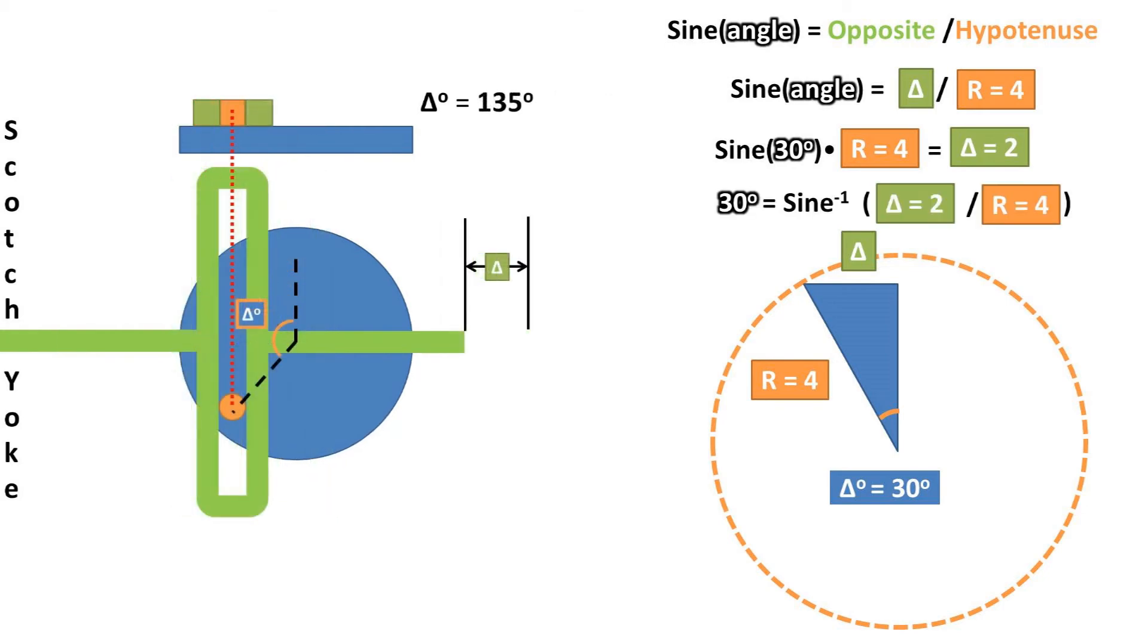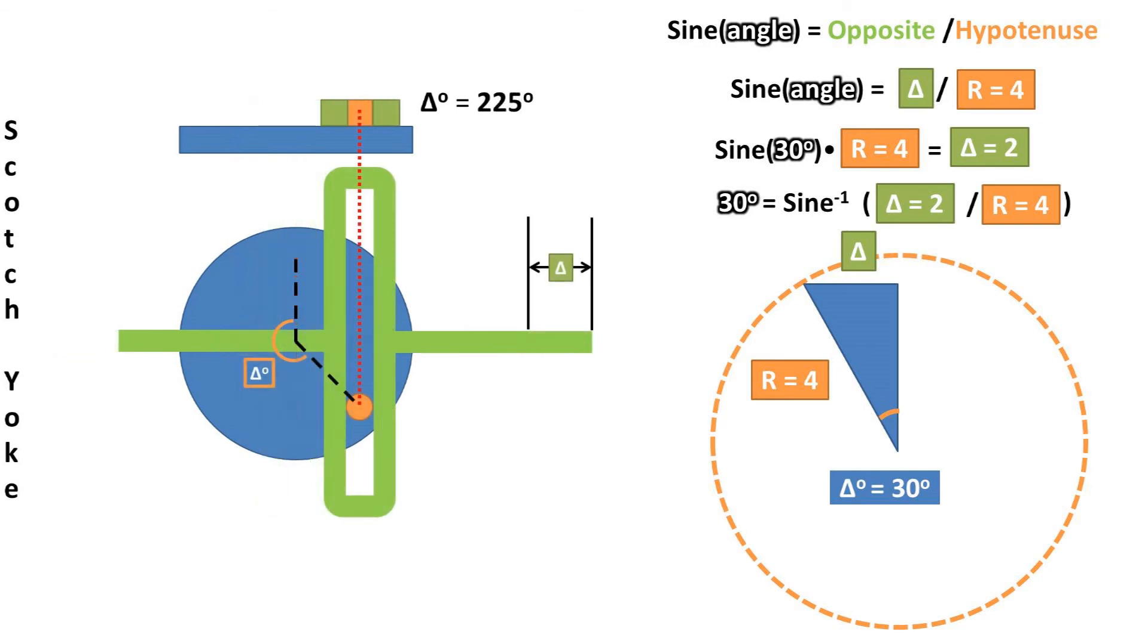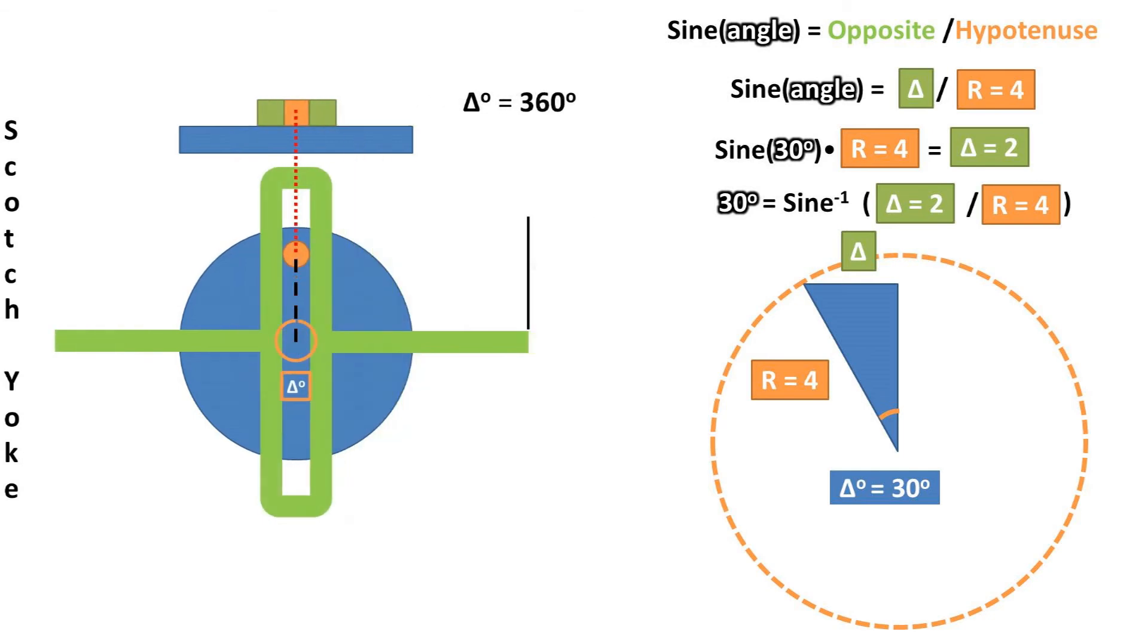Now if we wanted to solve for the angle, we can take the inverse sine of the opposite, or the change in yoke distance, over the hypotenuse, or the radius of the path. We get 30 degrees plugging in our numbers.